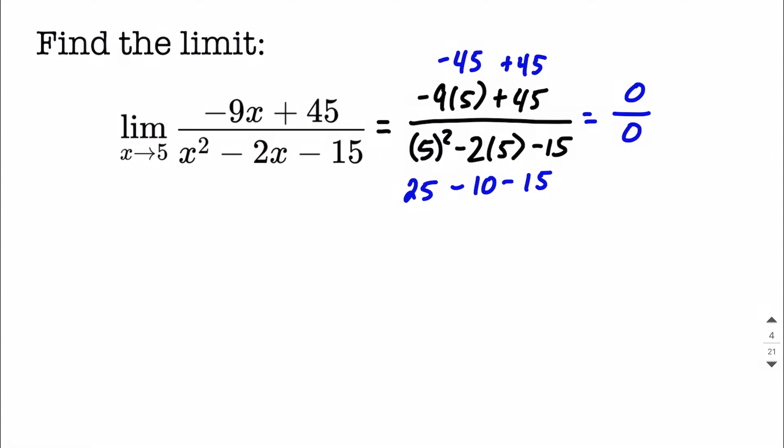This tells us that we need to keep going with this problem. But it also gives us some additional information. It tells us as we continue doing this limit, because 5 being plugged in made the numerator equal 0 and the denominator equal 0, it tells us that x minus whatever that x value is, is going to work out to be one of our factors in both the numerator and denominator, assuming we don't have a square root involved or something like that.